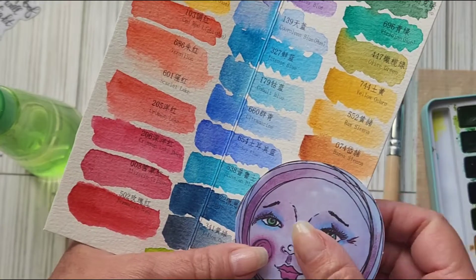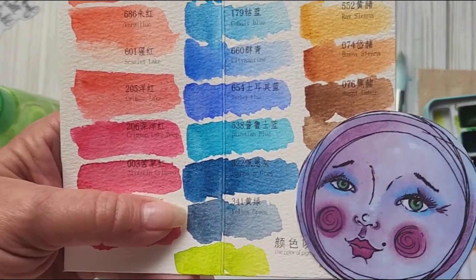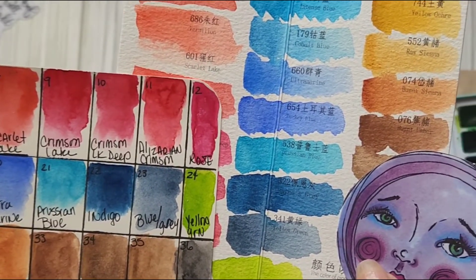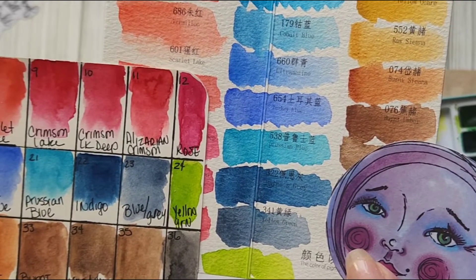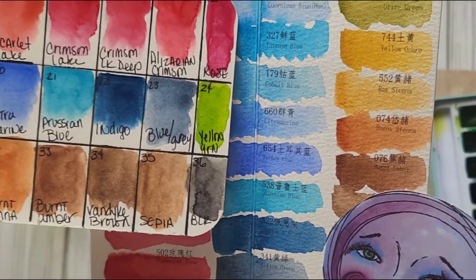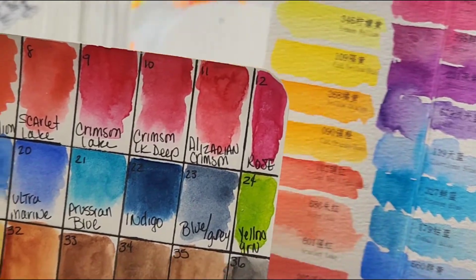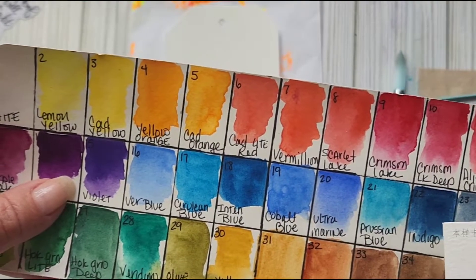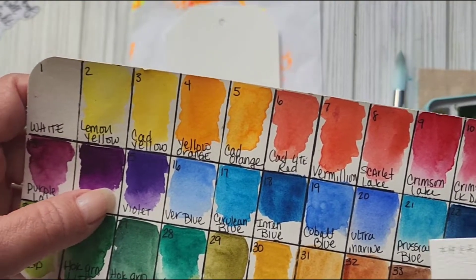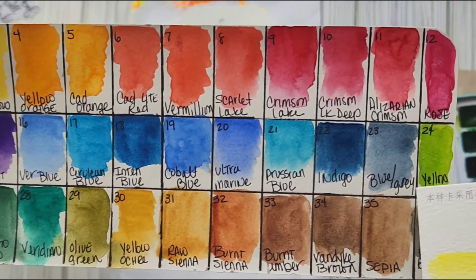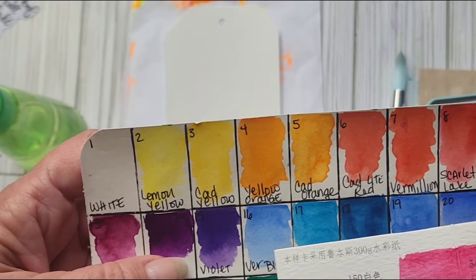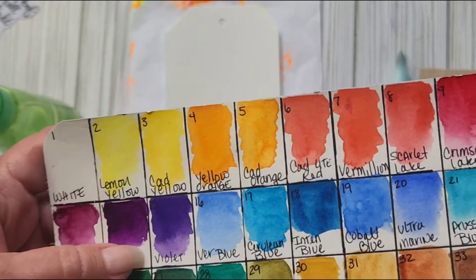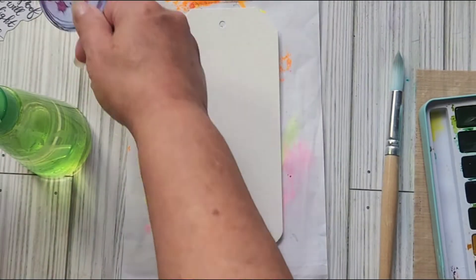I think I will go with my blue gray and my indigo, and I might add a little bit of ultramarine. Not that, that's too purple. So my blue gray, my indigo. Anyway let's get started and have some fun.